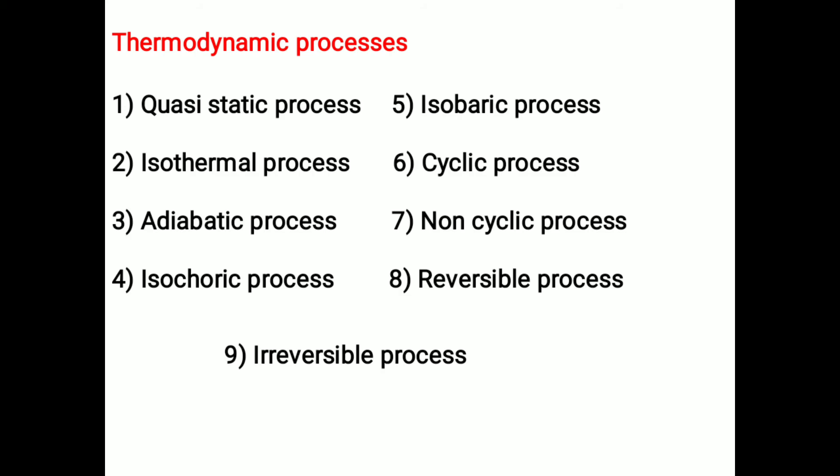Thermodynamic processes — there are different types of processes, namely: number 1, quasi-static; number 2, isothermal; number 3, adiabatic; number 4, isochoric; number 5, isobaric; number 6, cyclic; number 7, non-cyclic; number 8, reversible; number 9, irreversible process.